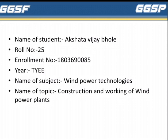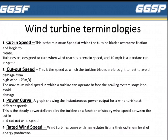Now we will look at wind turbine terminologies. First is cut-in speed. This is the minimum speed at which the turbine blades overcome friction and begin to rotate. Turbines are designed to turn when wind reaches a certain speed, and 10 mph is a standard cut-in speed.